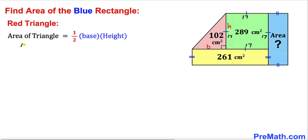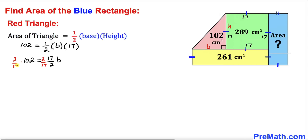So: 102 equals one half times base b times height 17. On the right hand side this is 17 divided by 2 times b. Let's isolate b by multiplying both sides by the reciprocal, 2 divided by 17. The 2s and 17s cancel, and our base b equals 12 centimeters.